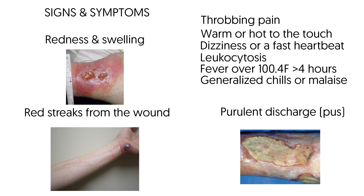Signs and symptoms of infection include redness and swelling, which should diminish over time during the initial phases of wound healing. If it does not decrease and red streaks are seen in the skin around the wound or progressing away from the wound, an infection is likely present. Throbbing pain or tenderness in the wound area is another sign; pain should gradually subside as the body heals, and a sudden or increased pain may be a sign of infection.